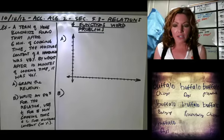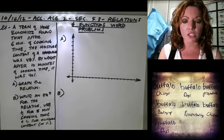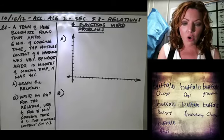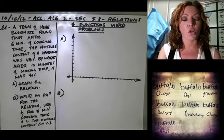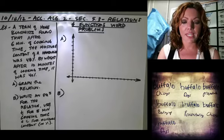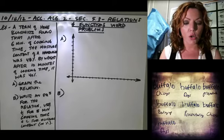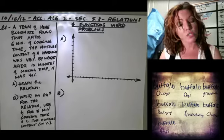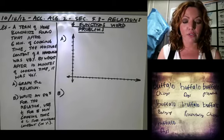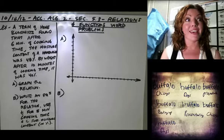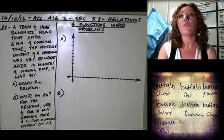Today we are doing relations and functions word problems. We have a team of home economists that were cooking hamburgers. They found that after six minutes of cooking, the moisture content of the hamburger was 48 percent by weight — rather dry. Then after 10 minutes of cooking time it was 40 percent moisture by weight.